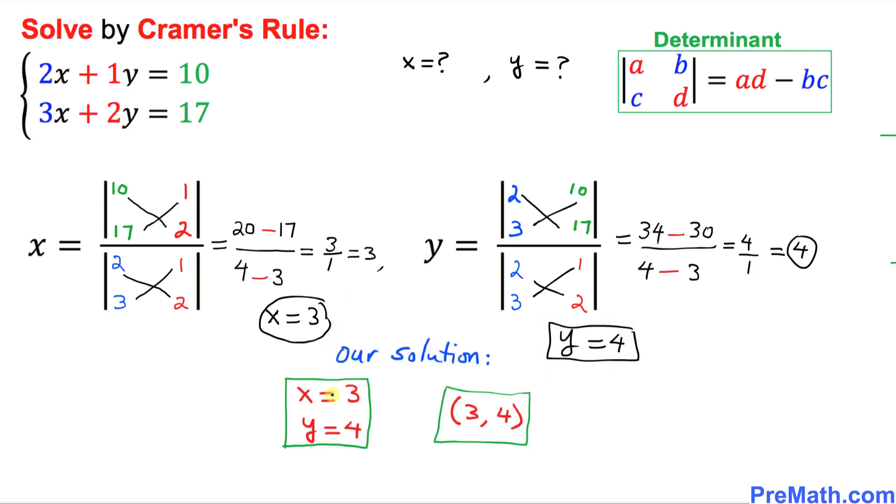So thus our solution turns out to be x equal to 3 and y equal to 4. If you want to put it in an order pair or in a coordinates form, x equal to 3 and y equal to 4. And that is our answer.